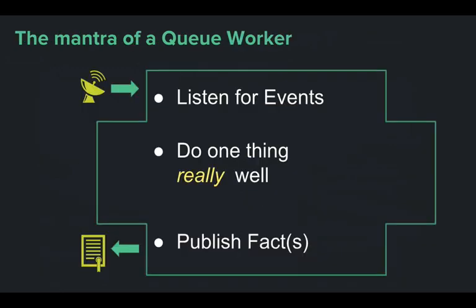The mantra of a queue worker: it listens for an event, it does one thing really well, and then it publishes a fact. The whole concept is decoupling all the logic in your system so each piece does one thing well. Kind of like Steam Whistle Brewery in Toronto — their marketing slogan is 'we do one thing really well,' and it's been successful. It's a great beer.